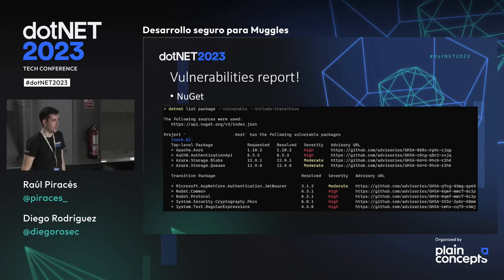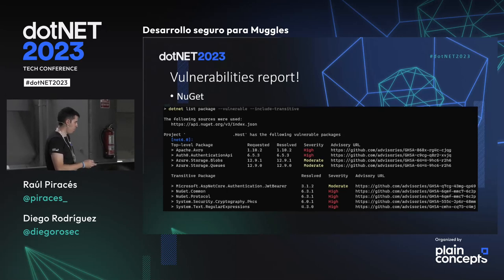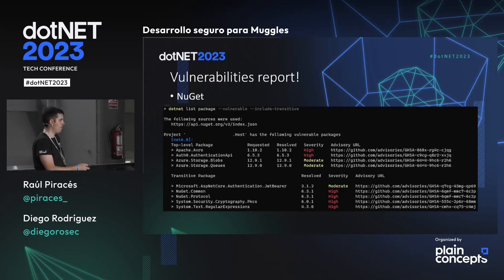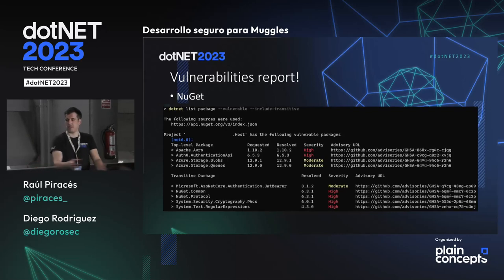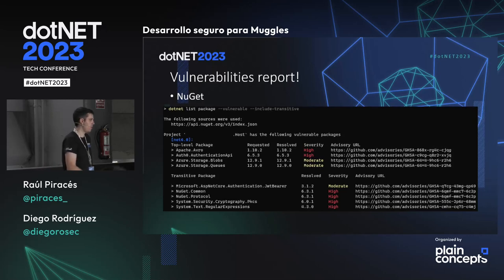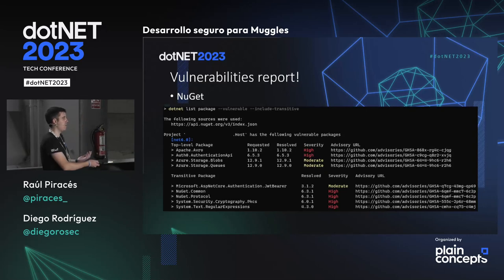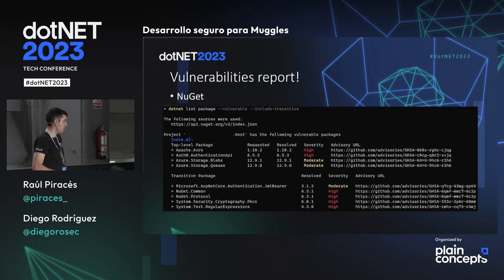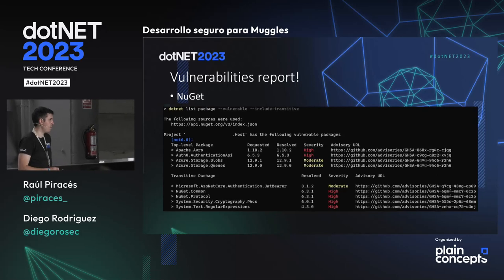En el ecosistema NuGet/.NET, desde .NET 5 existe la habilidad de listar paquetes vulnerables con 'dotnet list packages --vulnerable', incluyendo el flag de transitivos para dependencias transitivas. Tenemos un proyecto de ejemplo con Apache Avro y otra librería con vulnerabilidades graves reportadas, con link a la base de datos de Advisories de GitHub que explica qué pasó, quién lo descubrió y cómo solucionarlo. Los paquetes transitivos también pueden tener vulnerabilidades de criptografía y expresiones regulares: hay que prestarles atención.